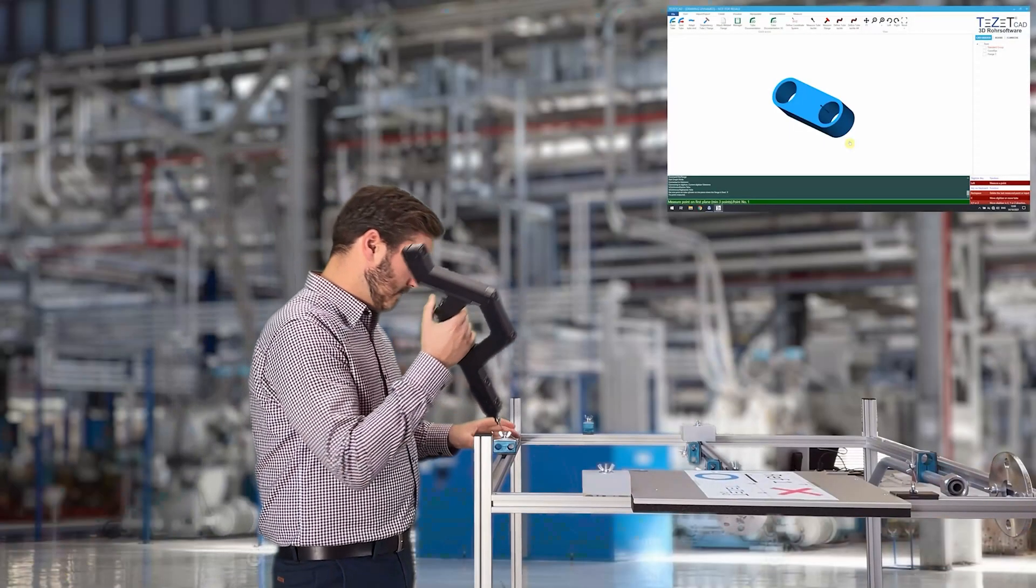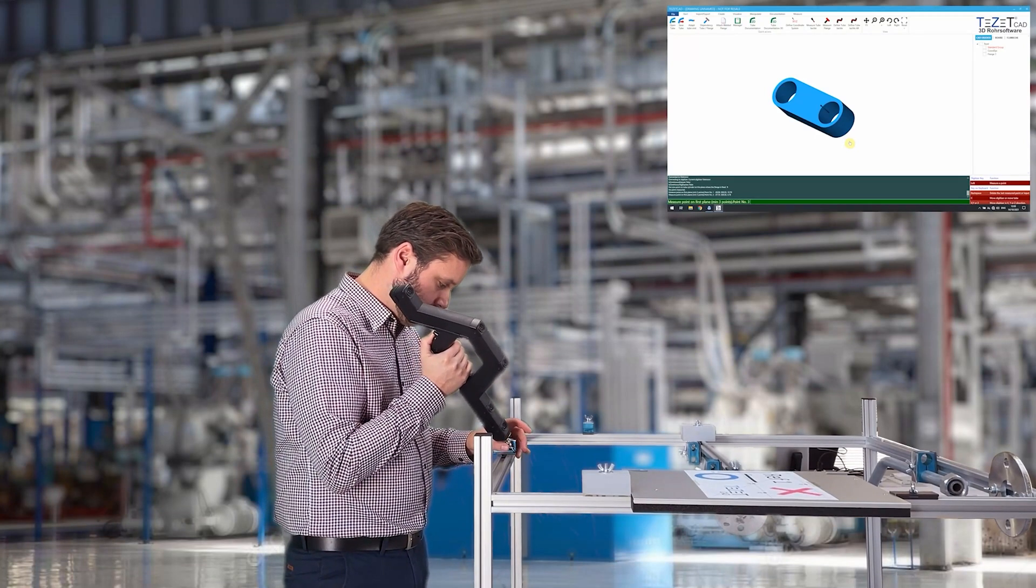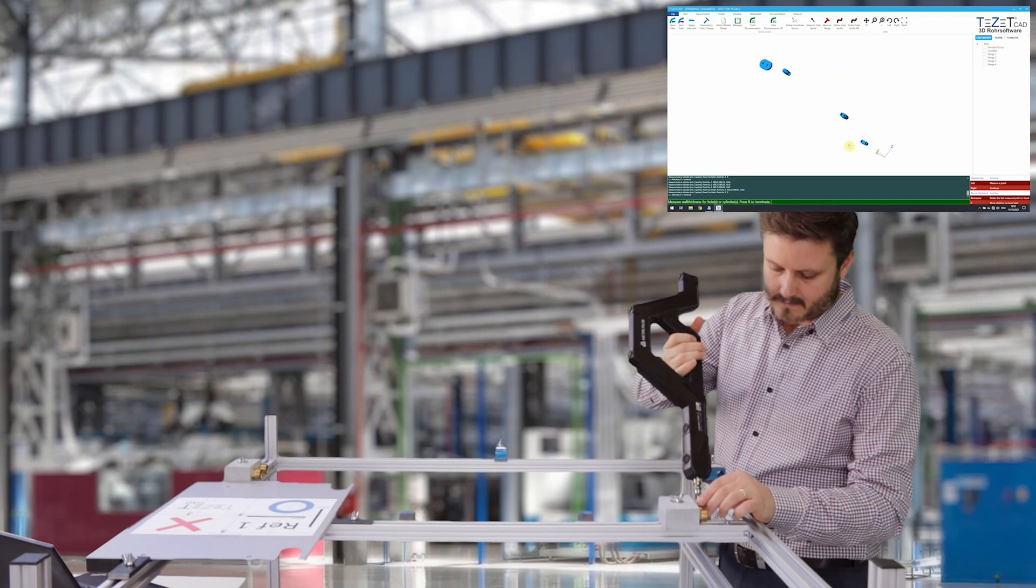You can also define active constraints, such as allowing only 90 degree bends or pipes having to end perpendicular into their connection points.